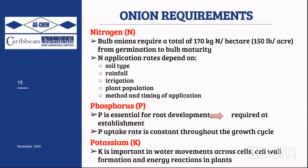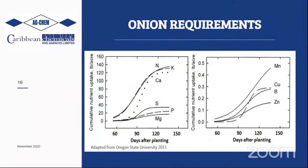Potassium is very essential for cell development and water movement across cells, as well as energy reaction processes in the plant. High levels of potassium are required for onion production. It is recommended that 30–50% of potassium be applied pre-planting, while being mindful of sodium and salinity levels in the soil.